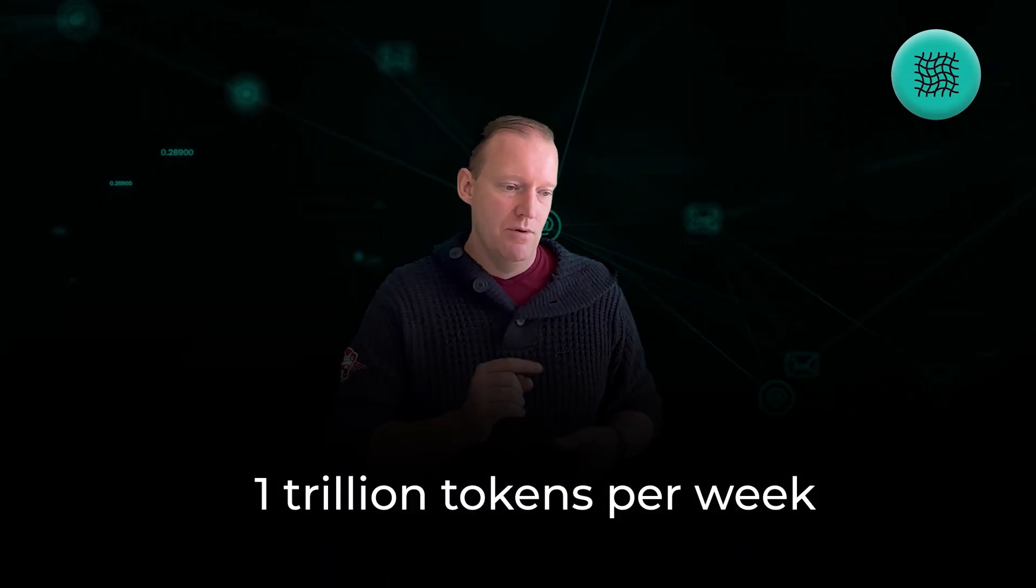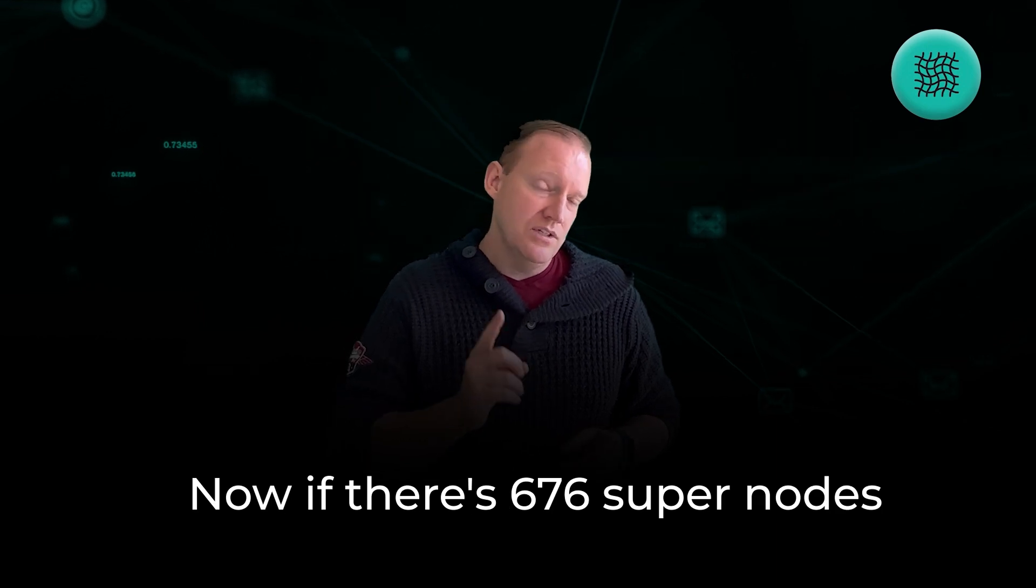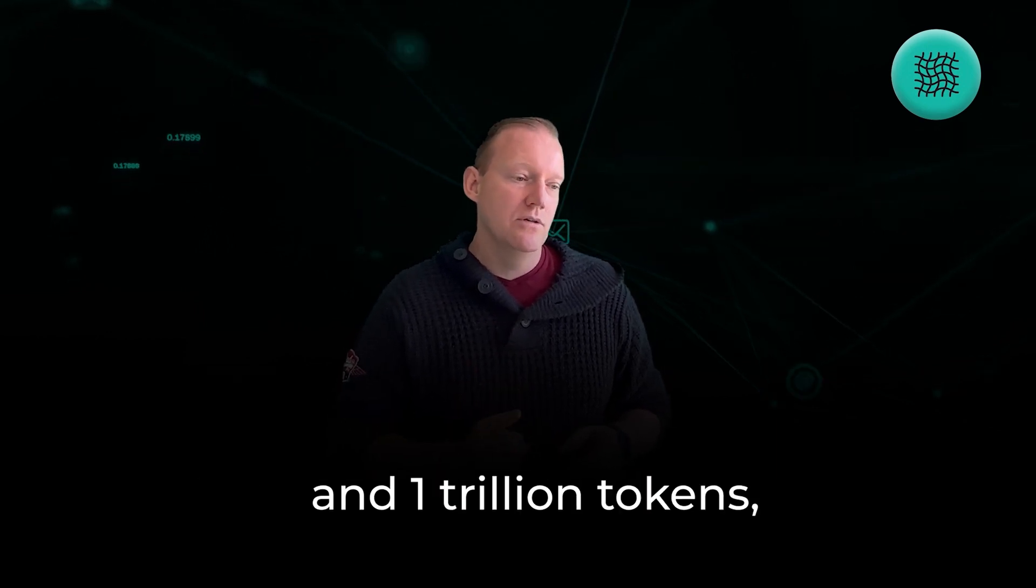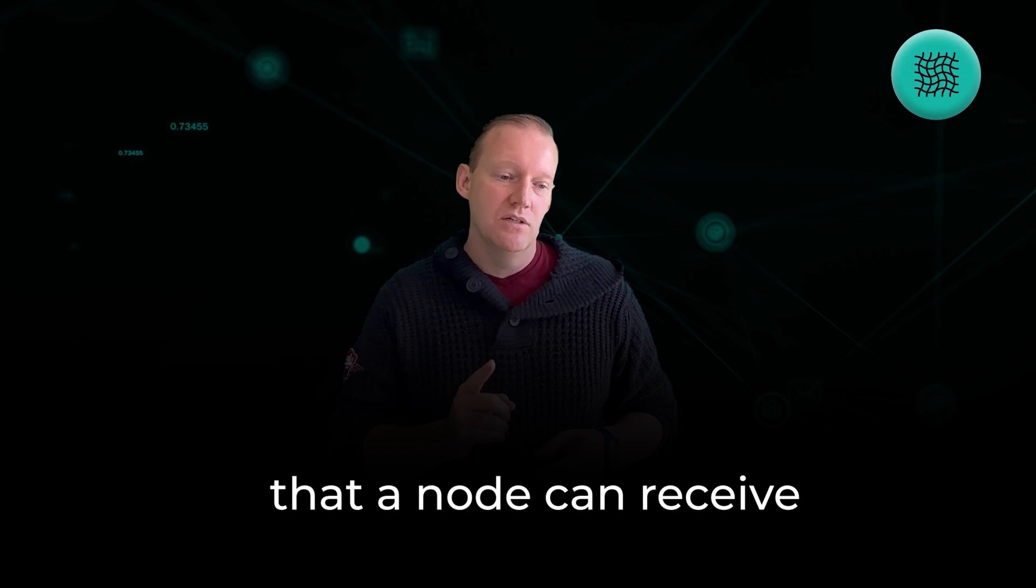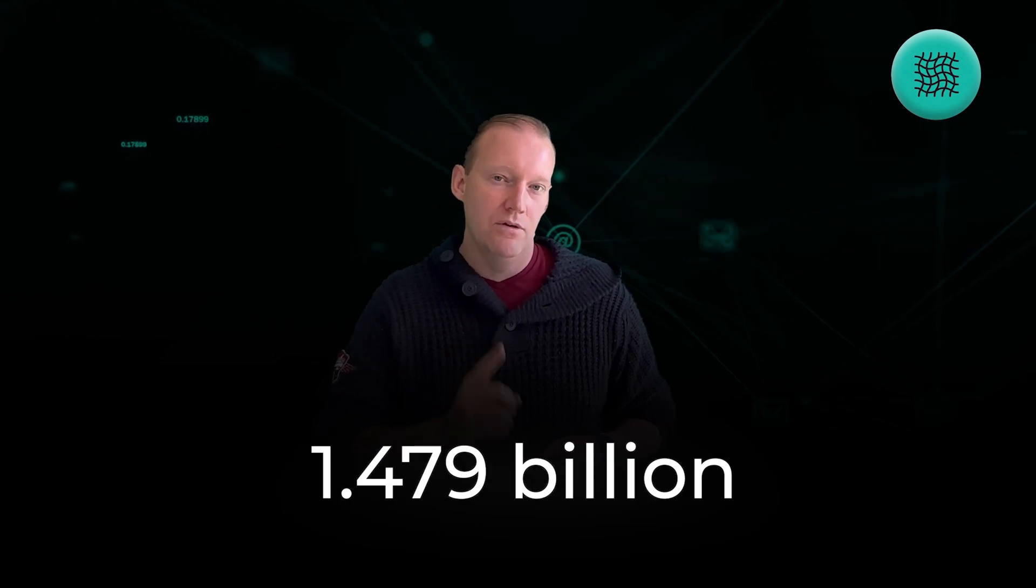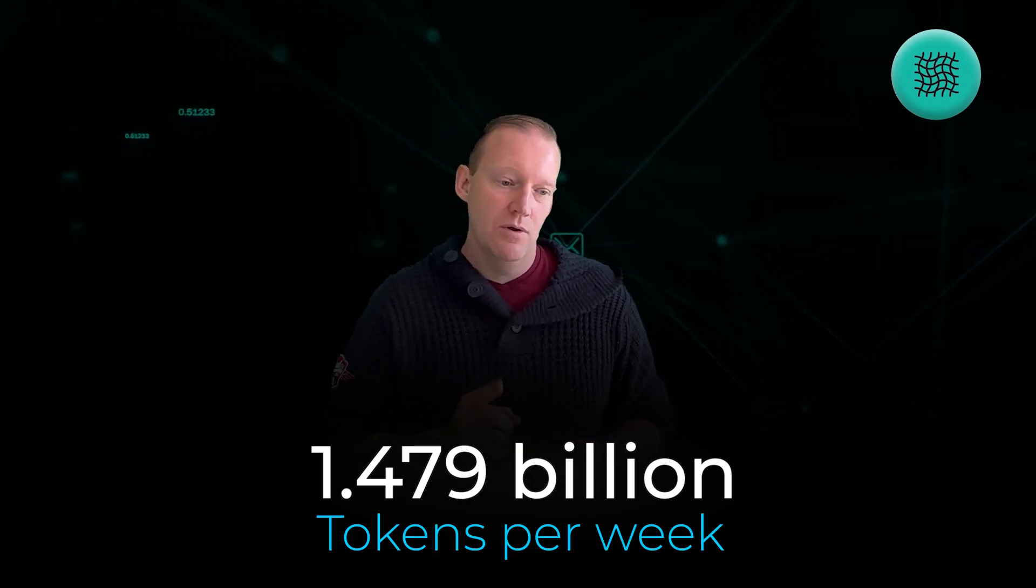In terms of understanding the numbers, here's some of the numbers on how that actually works. So the Qubic protocol releases one trillion tokens per week. Now if there's 676 super nodes and one trillion tokens, that means that the maximum amount that a node can receive is 1.479 billion tokens per week.